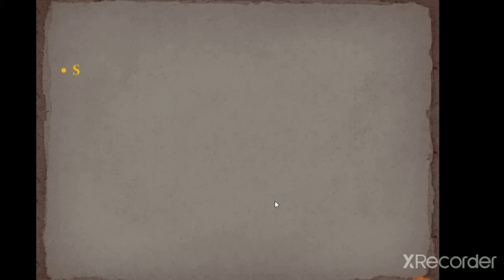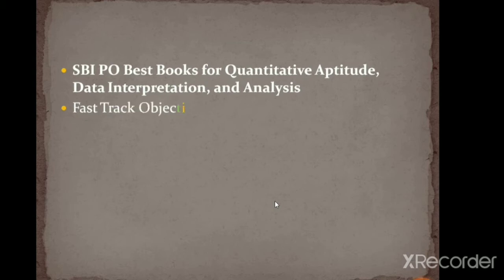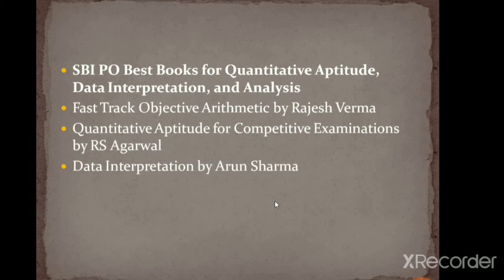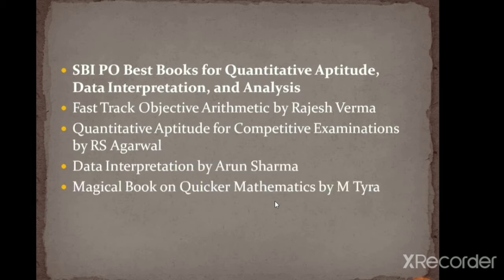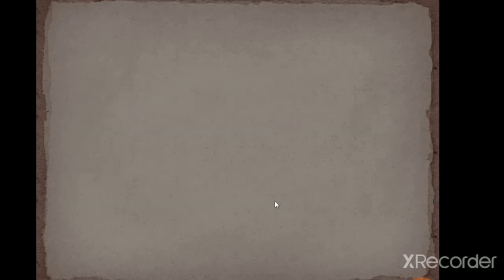Then let us discuss the subject-wise books useful for preparations. For SBI PO, the best books for quantitative aptitude, data interpretation and analysis are: Fast Track Objective Arithmetic by Rajesh Verma, Quantitative Aptitude for Competitive Examinations by R.S. Agarwal, Data Interpretations by Arun Sharma, Magical Books on Quicker Mathematics by M. Tyra, and Quantum CAT by Sarvesh Kumar Verma. So these are the books for quant.